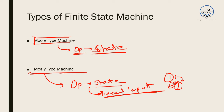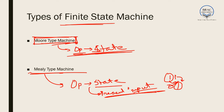In real-life problems we encounter both types of machines — the output might depend on state and may or may not depend on input. In a finite state machine, the output is almost always dependent on state. Whether it also depends on input is what differentiates a Moore type machine from a Mealy type machine.